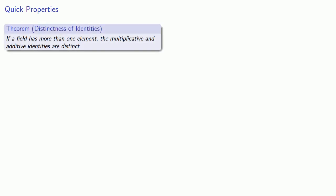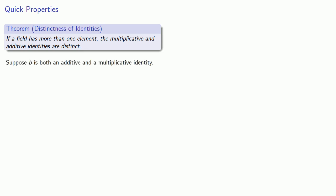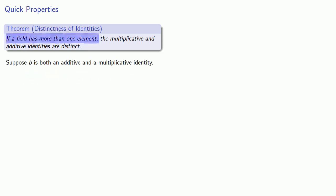And finally we have one important property. If a field has more than one element, the multiplicative and additive identities are distinct. So suppose we have something that is both an additive and a multiplicative identity. Now if our field has more than one element, there has to be something besides B.